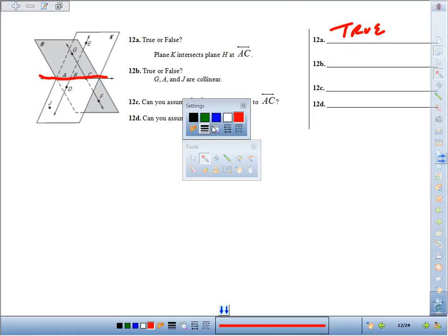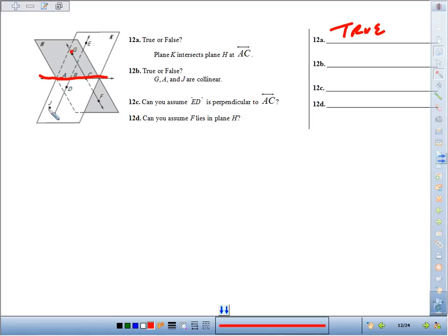True or false: GA and J are collinear. GA and J... there's no line going between us, we can't assume it.